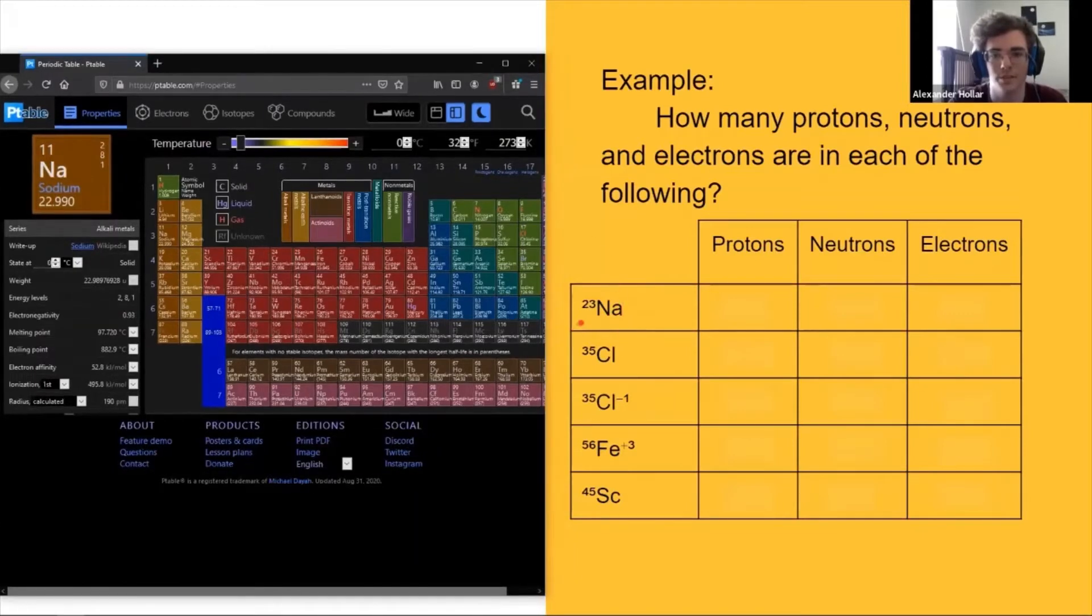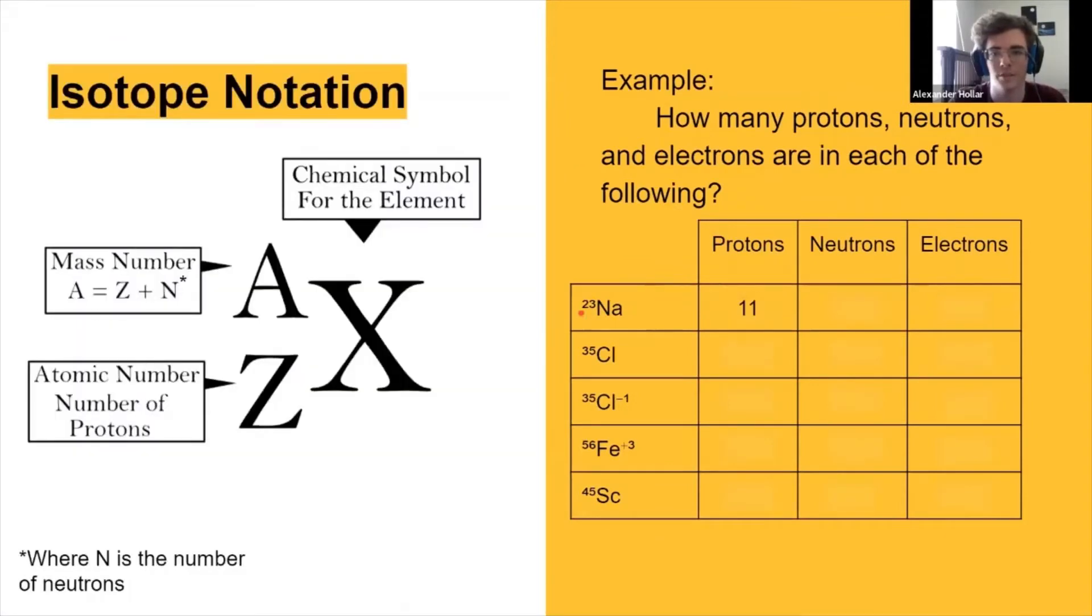So knowing that it has 11 protons, and then the protons plus neutrons is 23, how many protons, neutrons, and electrons does it have? Like we said, the number of protons is 11. That means that the number of neutrons would be 23 minus 11, which would be 12. And then because there is no formal charge on the sodium, the number of electrons must be equal to the number of protons, so that would be 11.